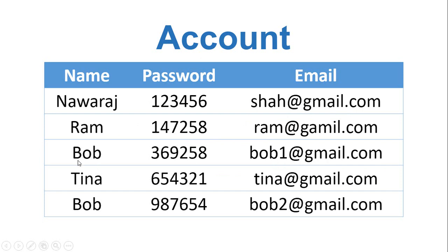Now suppose Ram wants to send his message to Bob. Ram can say: send my message to the person whose name is Bob. But as you can see in the name column, we have two Bobs, so his message goes to both Bobs, which is not right. So to solve this problem we need a column with a unique record.